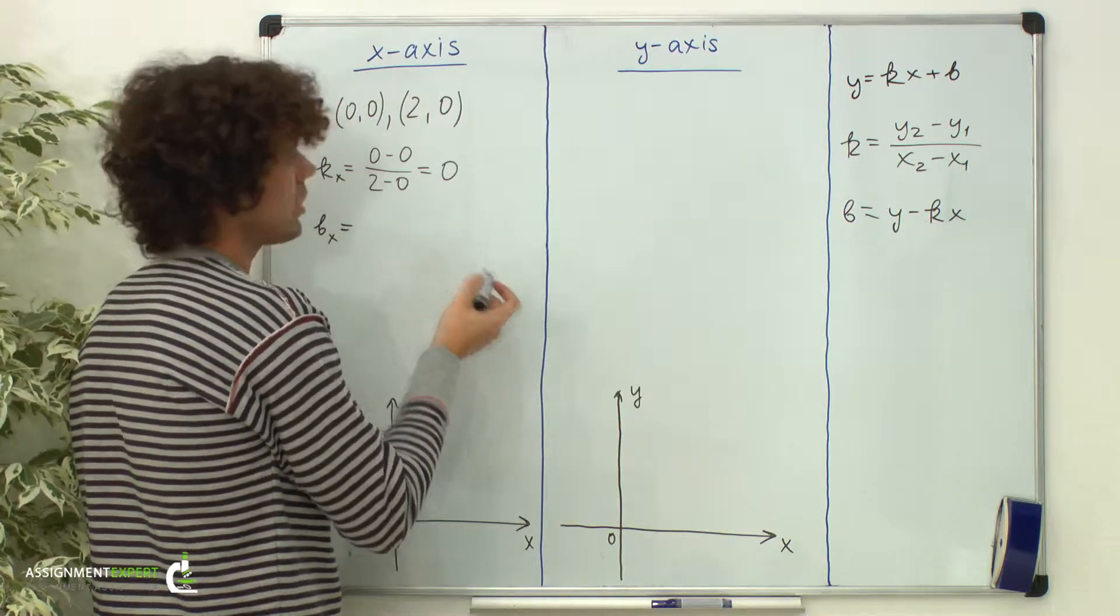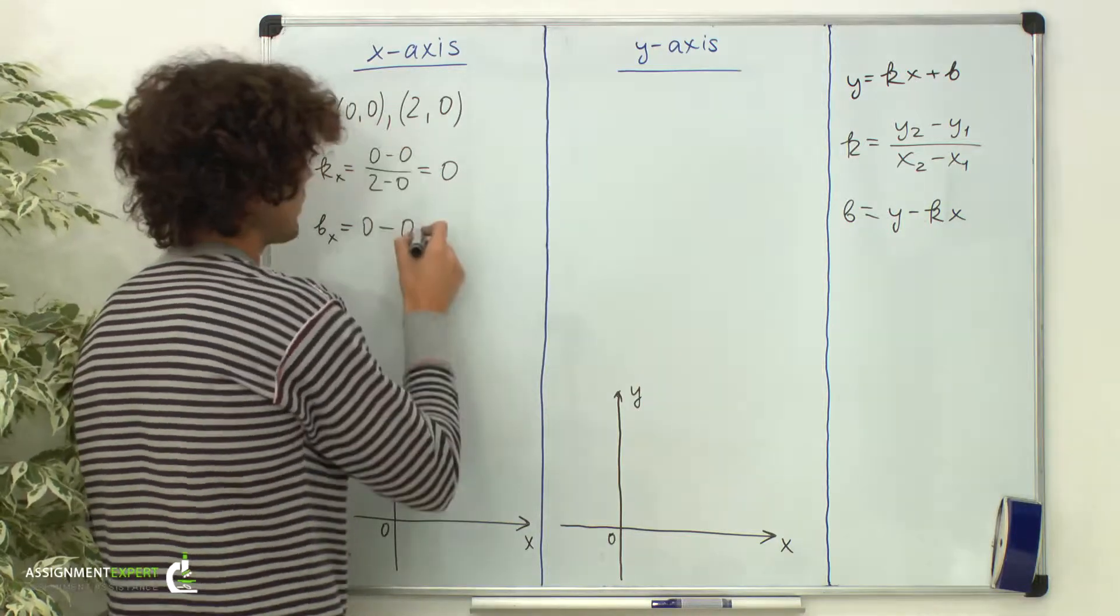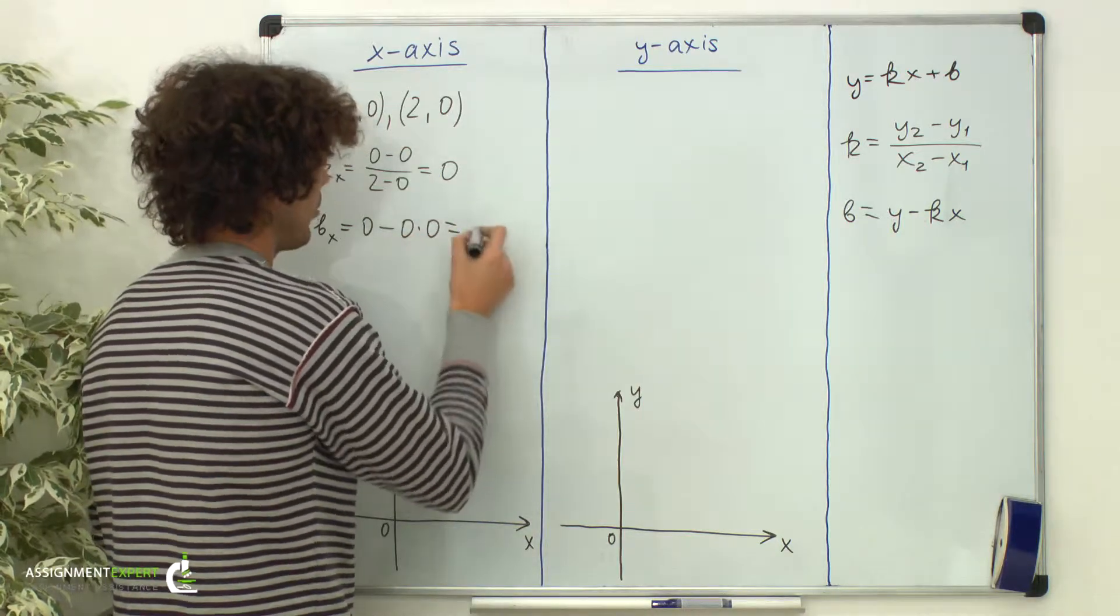And the y-intercept equals y, which is 0, minus k, also 0, and x, 0. And we obtain a 0.